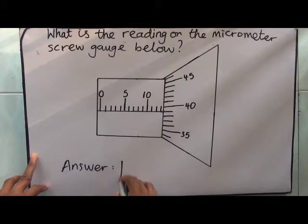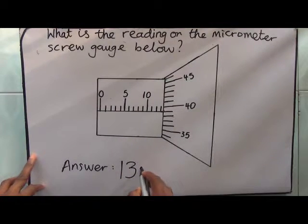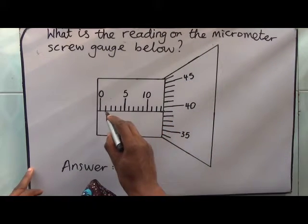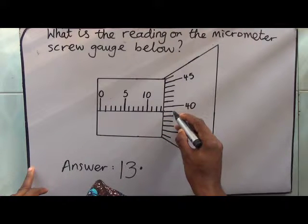So here you write 13, you put your decimal point, then you come here to read the value you have that is in line with this horizontal line and this is the value.